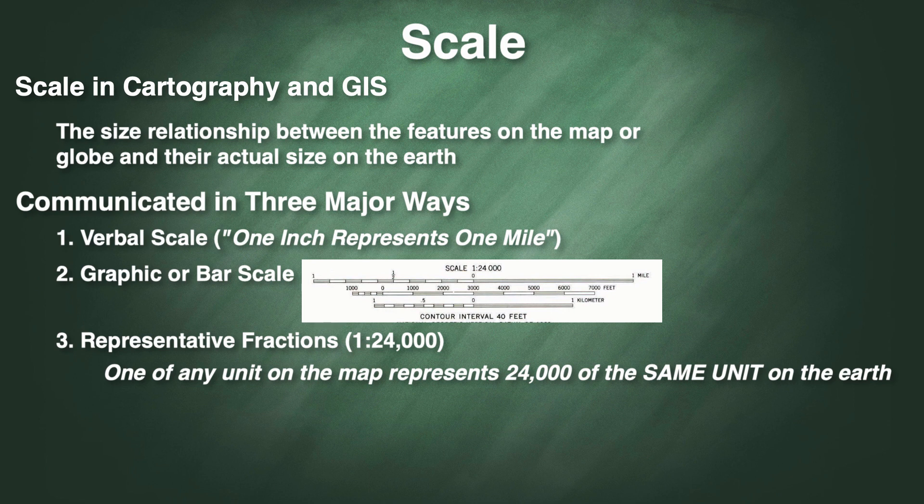Because scale is a ratio, specialists in this area often prefer for the scale to be communicated as a representative fraction because it is a unitless communication of the scale information. If you are working on a map at a scale of 1 to 24,000, then one of any unit on that map would represent 24,000 of the same unit on the map. It would be true that one inch represents 24,000 inches. It would also be the case that one centimeter on the map would represent 24,000 centimeters in the real world. So that's one way that we can use the term scale in geography.